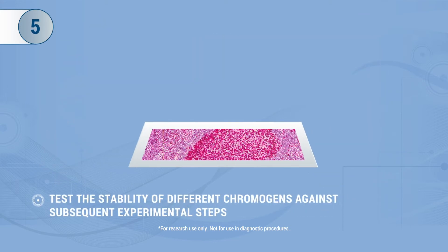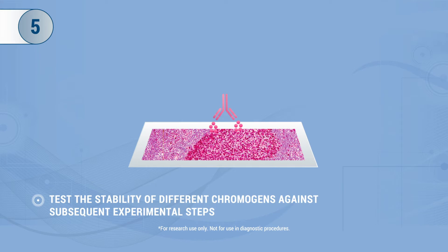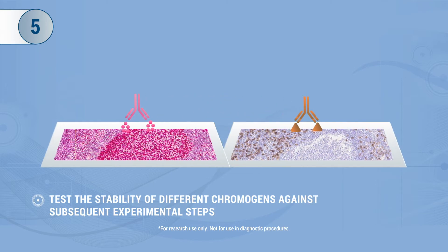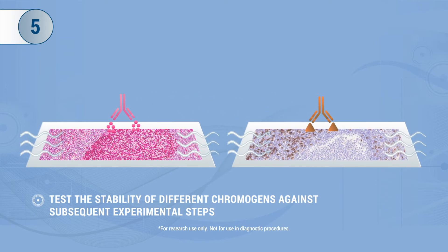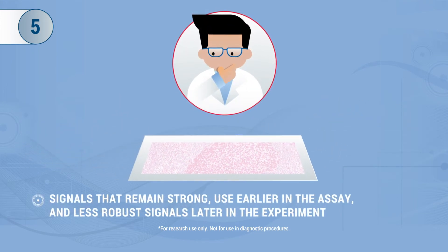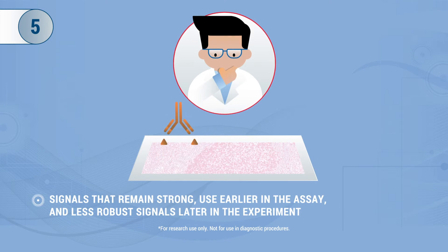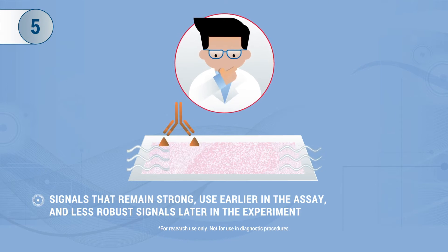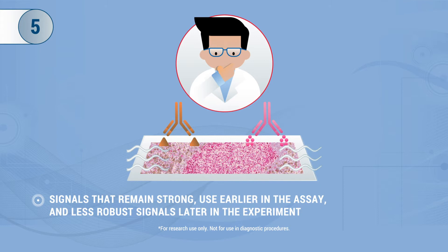Tip 5: For sequential target detection, test the stability of different chromogens against subsequent experimental steps, such as heat-induced or enzymatic antibody stripping. Signals that remain the strongest after testing should be used early in the assay. Those that show signs of signal reduction should be used later in the experiment and would be better suited to more robust targets.